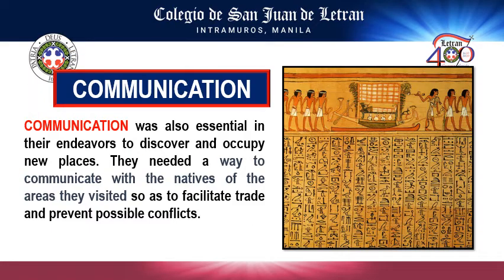The next problem encountered was communication. There were no cell phones, satellites, or internet in the past, and there was no common language yet — unlike today where we have English, Chinese, Mandarin, and Spanish. It was very difficult for people to communicate, so they used signals like light reflection, fire, and smoke to alert their home base of upcoming dangers or invaders. They also used pigeons as carriers of information, as a mode of communication to deliver messages faster and more easily.